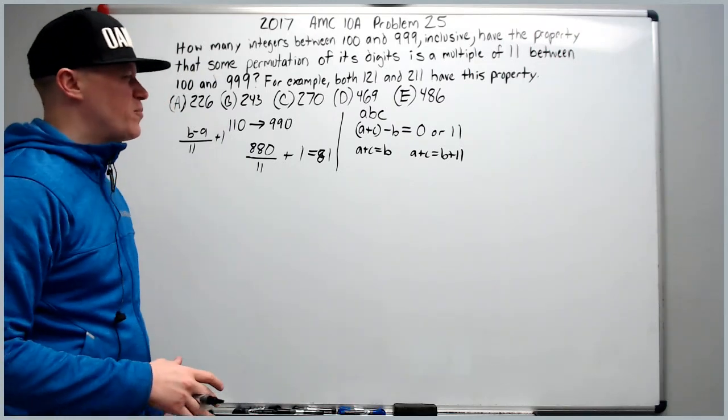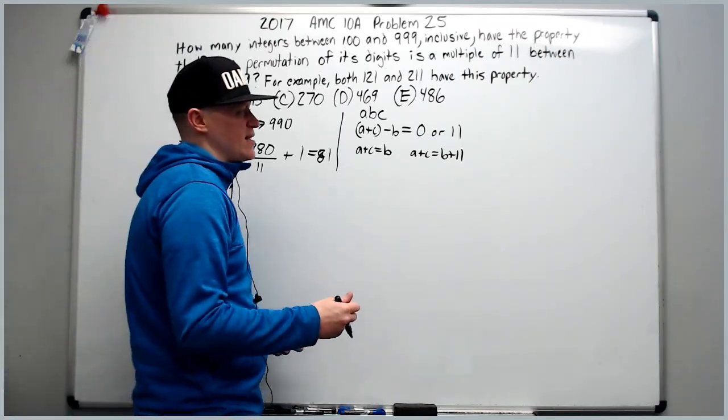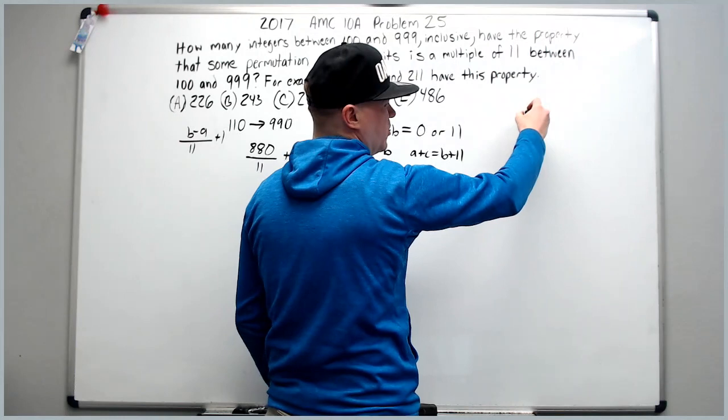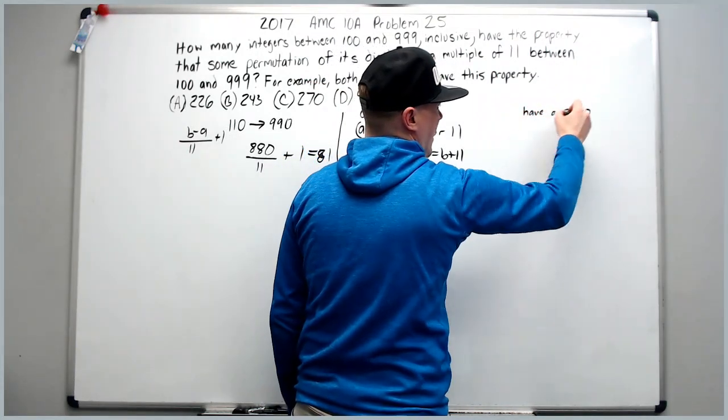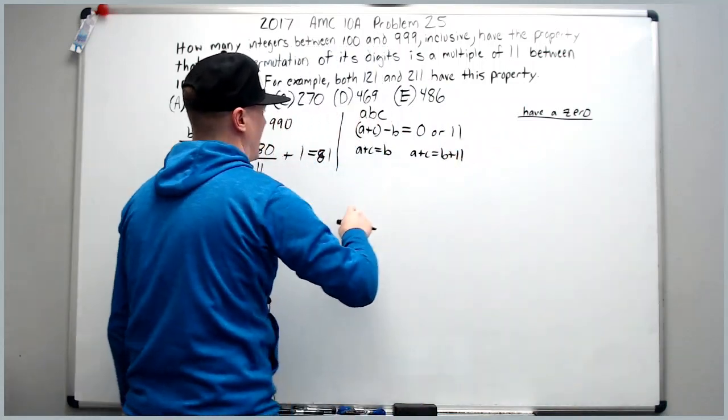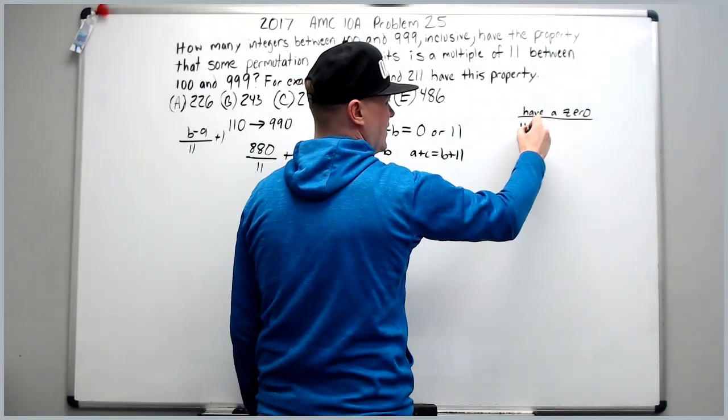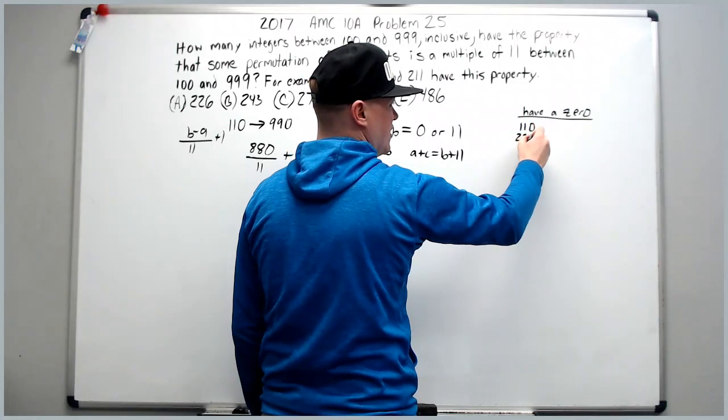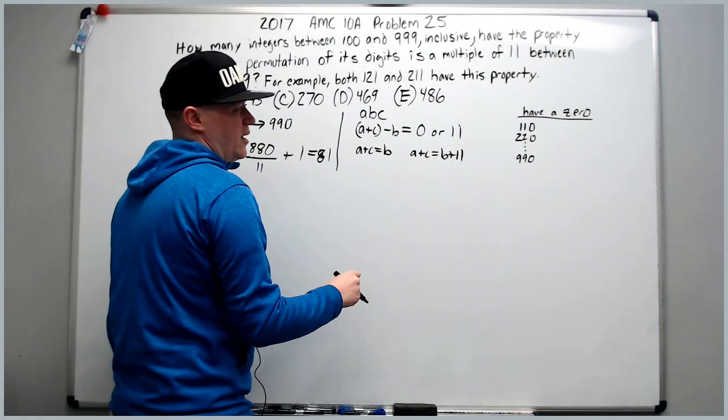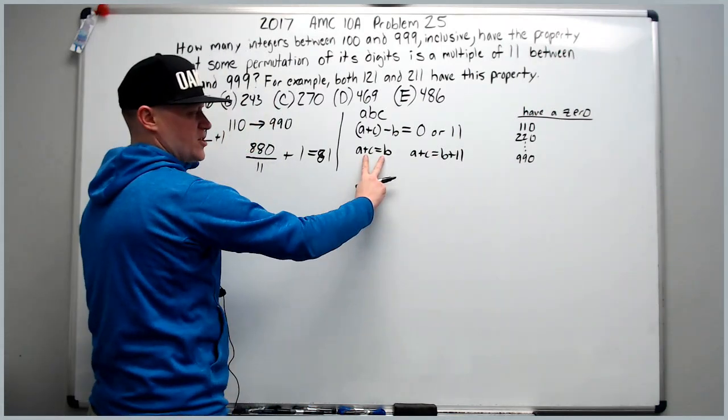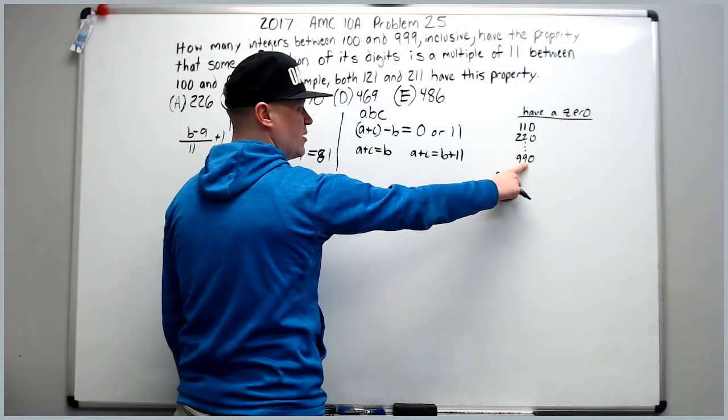From this point, we probably want to proceed trying to make some cases. For me, the cases I like to use for this problem would be something like, does it have a 0? And if it has a 0, that would be like this category here. The 110 is 1. It ends in 0 in that case. 220 all the way down to 990. In all of these,